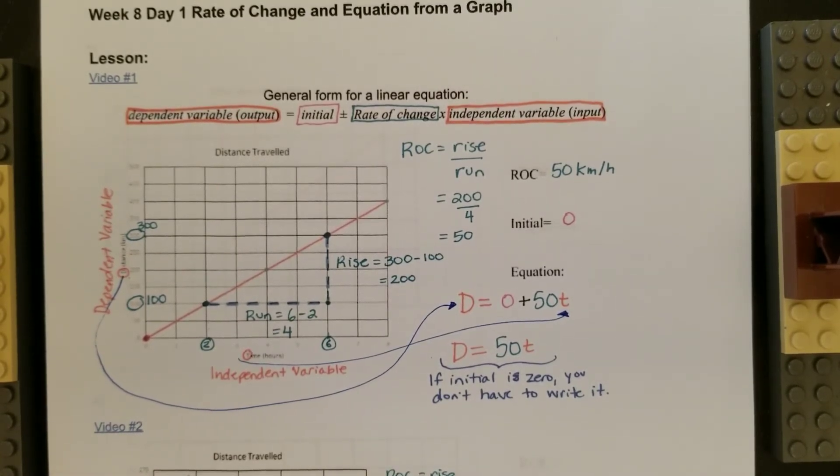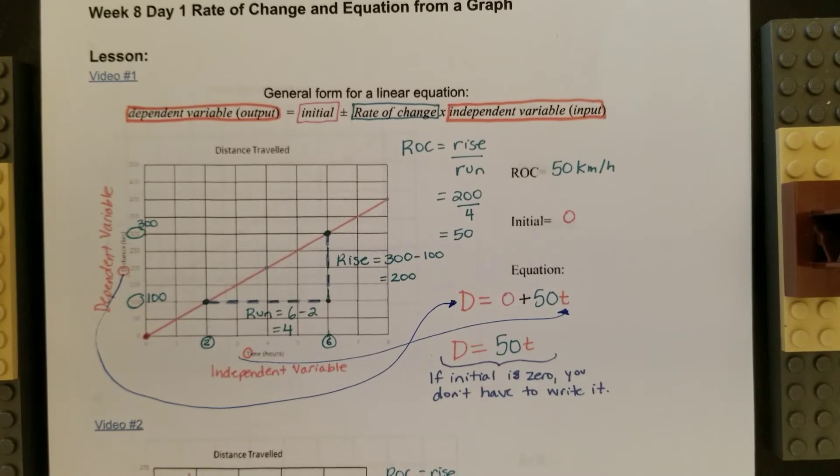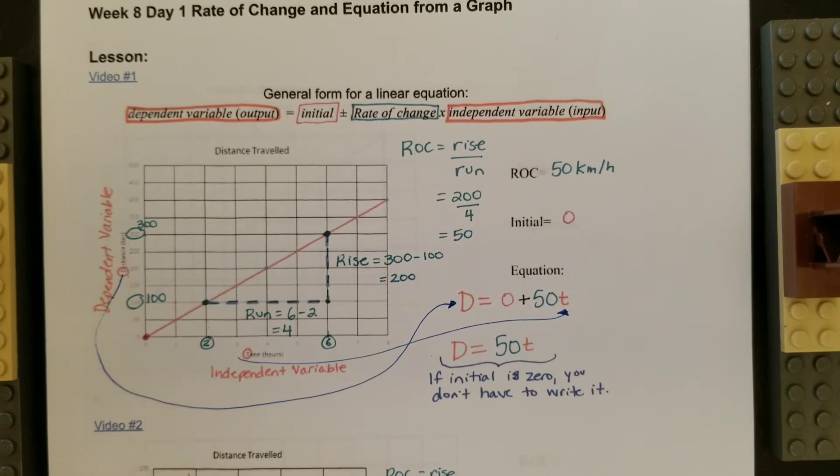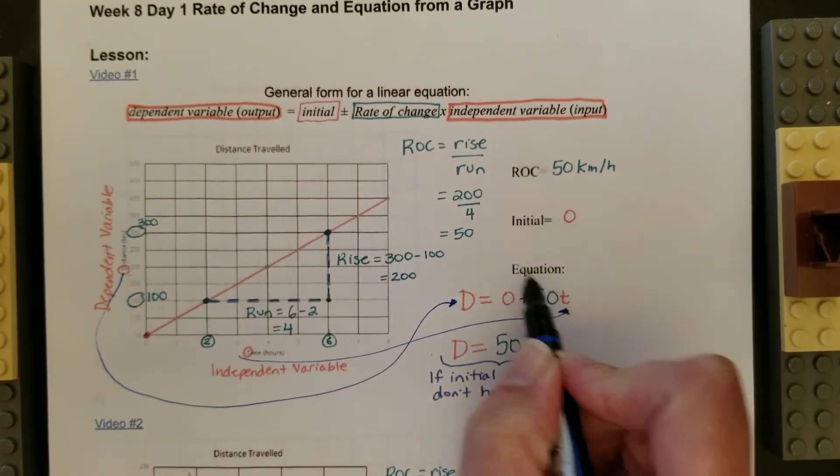So I hope that that is a little bit better. I also see that you're asking, do I use the answer from the ROC to fill out the variable part in the equation, or is it the number gap in the rise? And as you see here, I'm using the actual answer from the ROC.